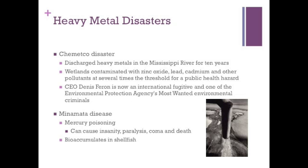There is a reason we are concerned with the levels of heavy metals in water. Two examples of the dangers of heavy metals are the Kometko disaster and Minamata disease. Kometko's illegal construction and use of a secret discharge pipe, which CEO Dennis L. Farron and others used to deliberately pump hundreds of tons of heavy metal waste into the Mississippi River from 1986 to 1996. Investigations showed the secret pipe had been active for 10 years. A large area of the wetland was contaminated with zinc oxide, lead, cadmium, and other pollutants at several times the threshold for a public health hazard. Visible evidence of the contamination extended five feet down into the bed of Long Lake. Farron is now an international fugitive and one of the Environmental Protection Agency's most wanted environmental criminals.